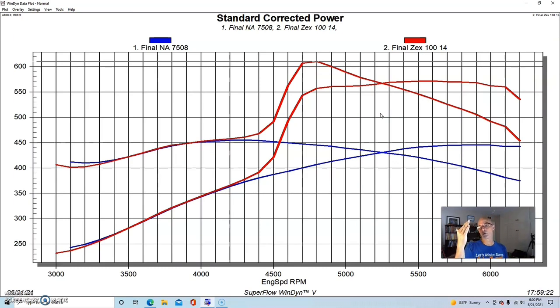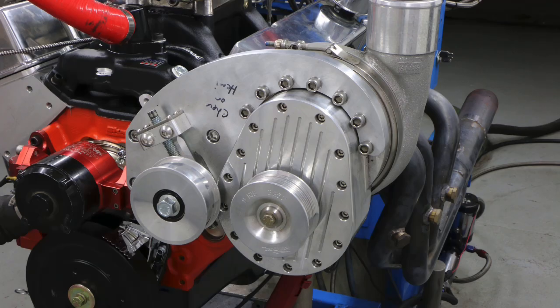The earlier that you activate the nitrous, the bigger the torque number will be. You'll just get a consistent gain of between 100 and 120 horsepower throughout the whole RPM range. It's just the earlier you activate it, the more torque you get. That's the great thing about nitrous. But let's see how this nitrous compared to the Torque Storm centrifugal supercharger.